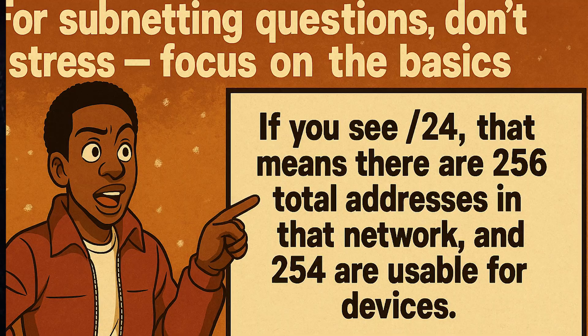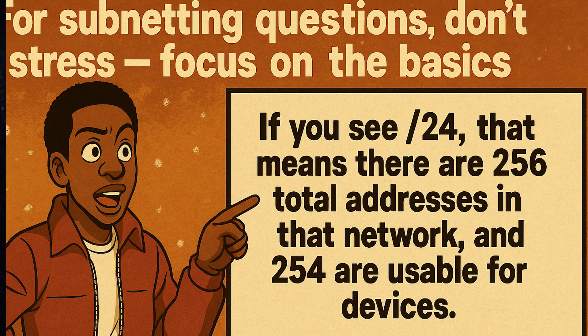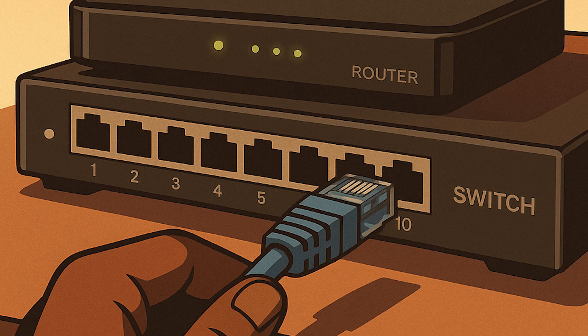So when you visit a website, it looks like one device — your router — is talking to the internet, even though multiple devices are connected behind it. For subnetting questions, don't stress. If you see /24, that means there are 256 total addresses in that network and 254 are usable for devices. You'll get questions testing if you can identify the network address, the broadcast address, and the usable host addresses.